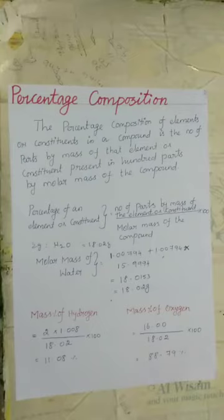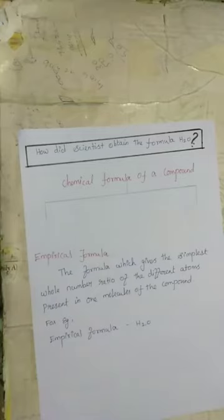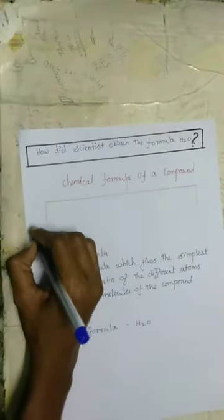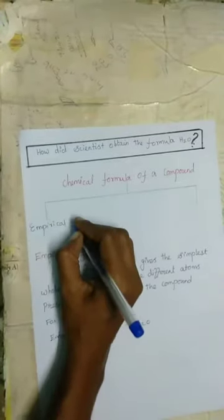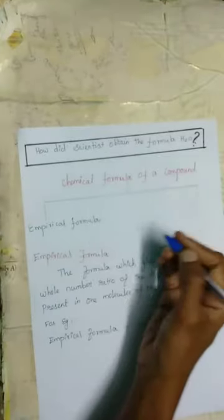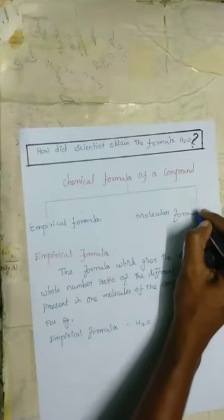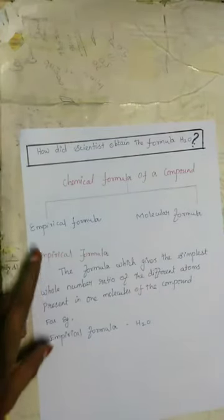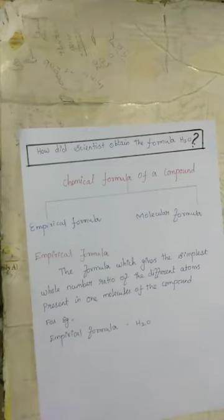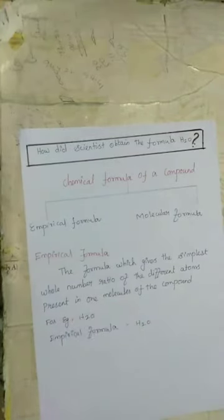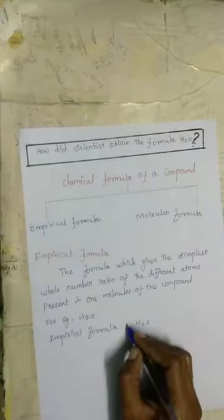The molar mass and percentage composition help us understand the data associated with a chemical compound formula. But how do we write a chemical formula? The chemical formula of a compound is divided into two parts: empirical formula and molecular formula. Empirical formula gives the simplest whole number ratio of the different atoms present in one molecule of the compound. For example, the empirical formula of water is H₂O — hydrogen contains two atoms and oxygen contains one atom.